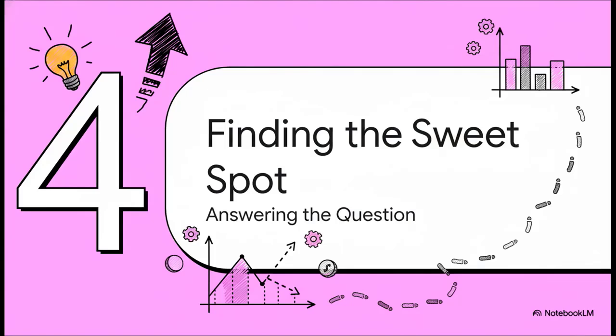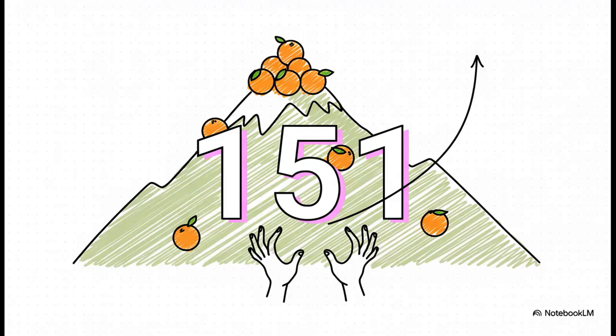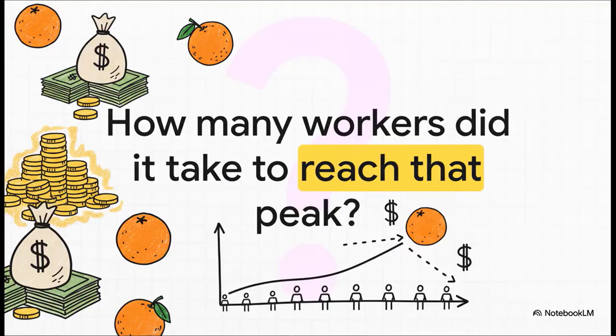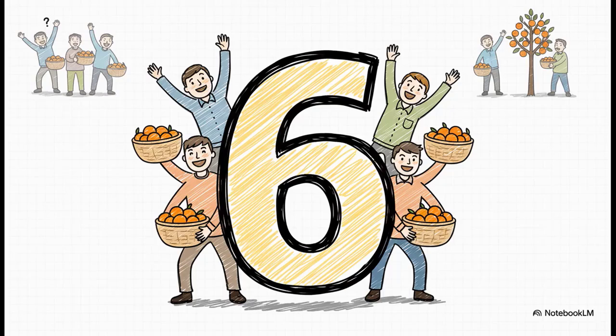Now that we understand this idea of marginal product, we can go back to our original question and find that sweet spot with absolute confidence. What was the absolute maximum number of oranges the team could pick? Our data shows us the peak of the mountain: 151. So the million dollar, or maybe the 151 orange question is, what was the exact team size that got us to this number? The data gives us a clear answer: six. Six workers is the optimal team size to get the maximum possible output. Not five, and most certainly not seven.